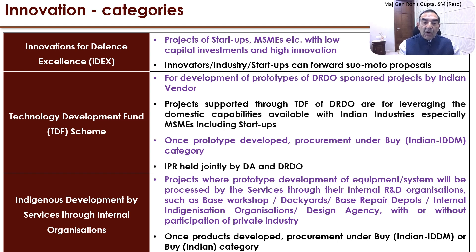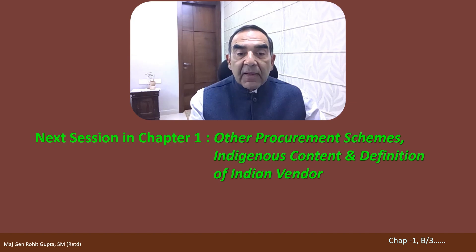There are certain internal organizations of the SHQ whose indigenous development is controlled by a third category, where different service organizations — with or without participation of private industry — can carry out development. Private industry can move in concert with these internal organizations. Once projects are developed, procurement takes place under the BUY Indian IDDM or BUY Indian category. In the next session, I will cover the other procurement schemes, indigenous content, and definition of Indian vendor.